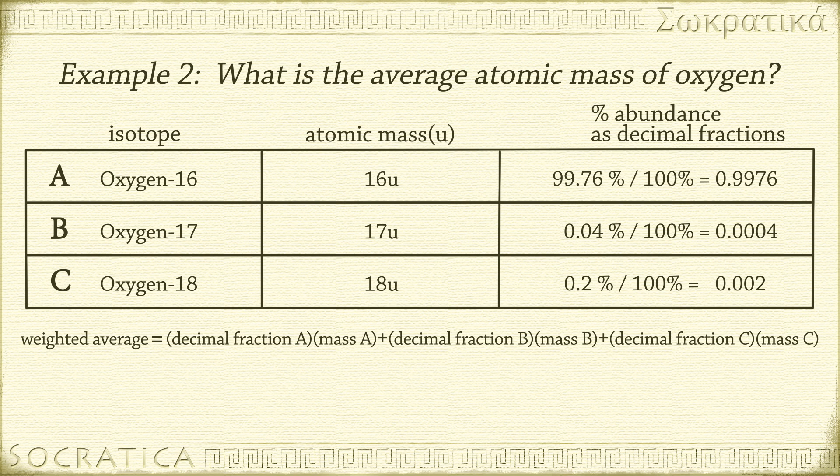The weighted average is 16 times 0.9976 plus 17 times 0.0004 plus 18 times 0.002. That equals 16.0044, or approximately 16.00 unified atomic mass units.